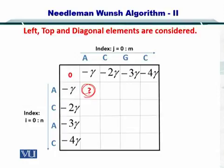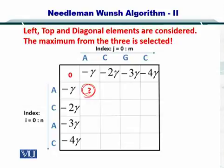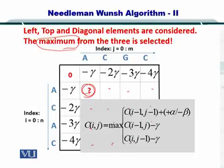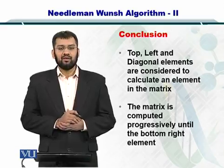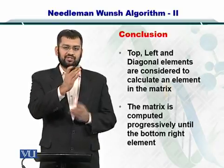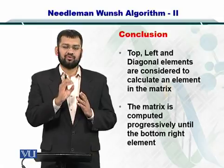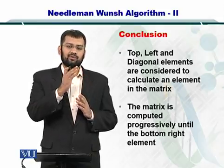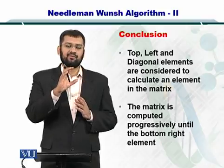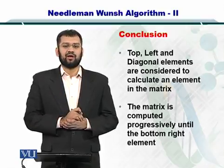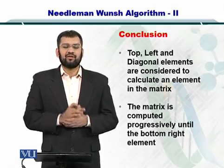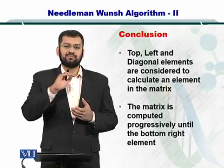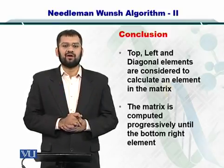So in this way, you can complete the matrix by looking at the maximums element by element like that. The only thing to remember is that you need to consider each one of these conditions. So in conclusion, the top, the left and the diagonal positions are used to compute the current position. And once you compute them, then the maximum of each one of these is placed in the element that you are trying to compute. And the matrix is computed progressively. And you fill each position one by one until all the positions are filled up.